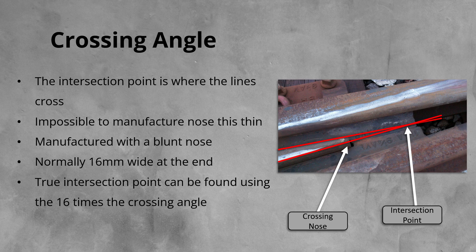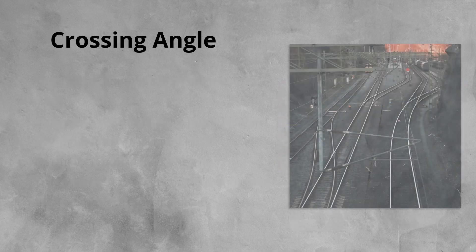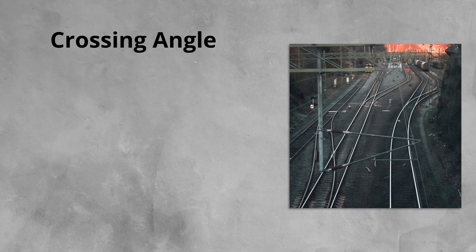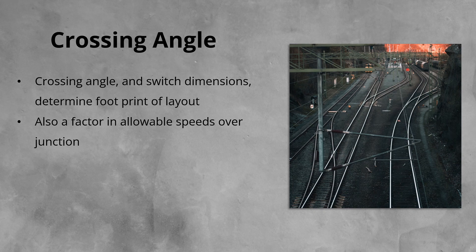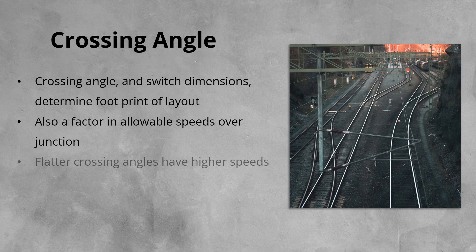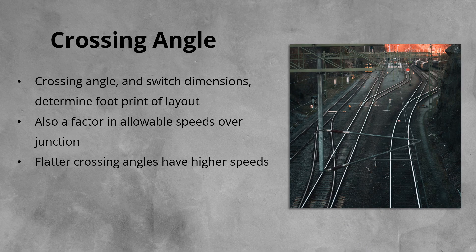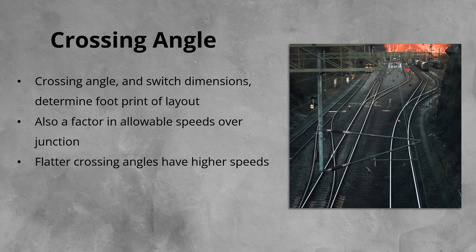The crossing angle is important, as along with the switch length and radius, it determines the overall footprint of the S and C layout. It also feeds into the speed that trains can be allowed to pass over a junction, an important factor in the overall performance of the railway. The shallower, or flatter, the crossing angle, the faster the speed that can be attained across it. However, this then requires longer switches with larger turnout radius, which in turn increases the overall size.